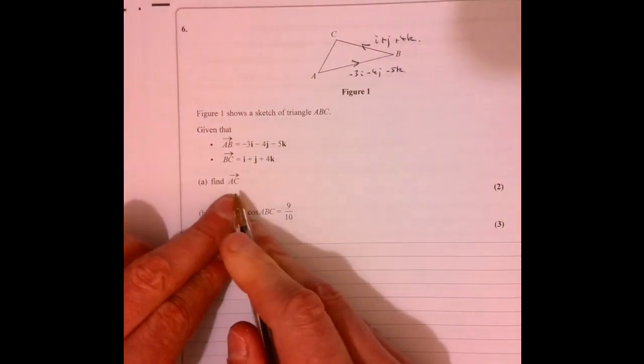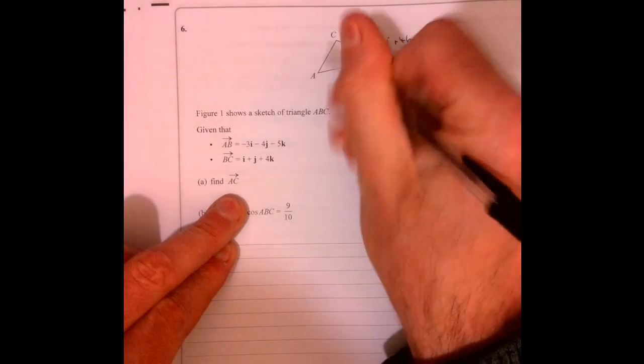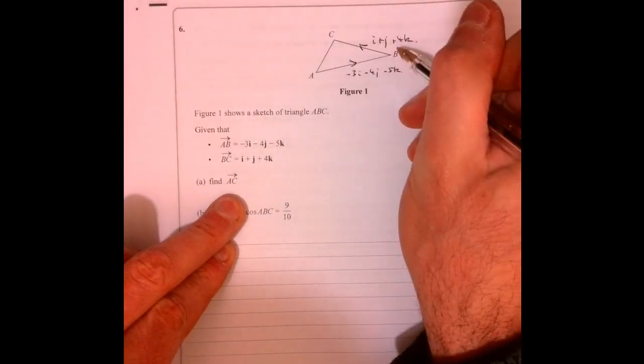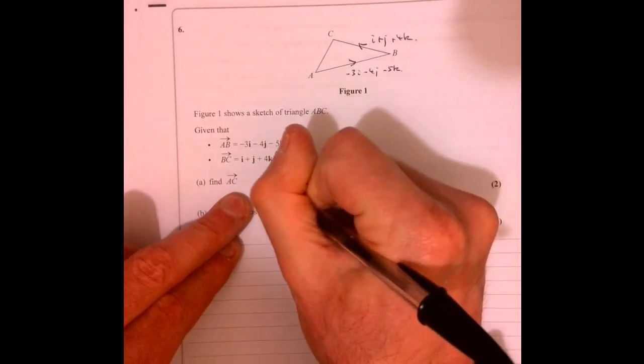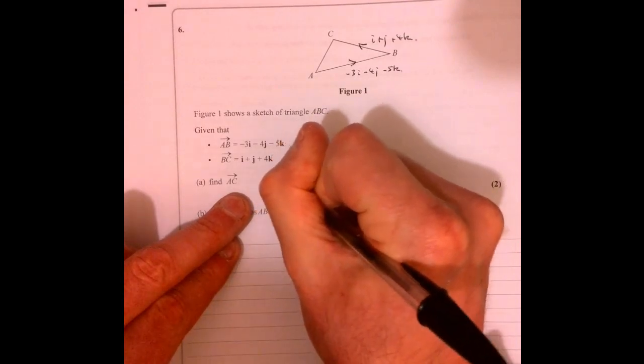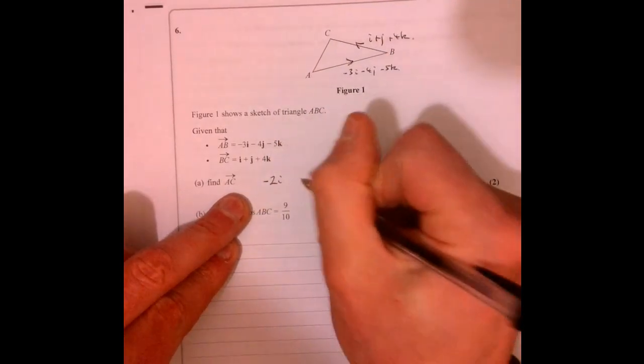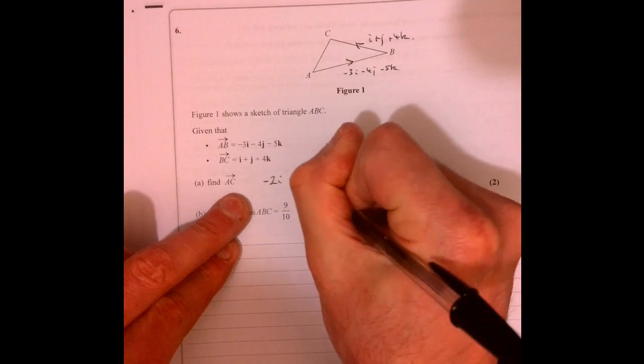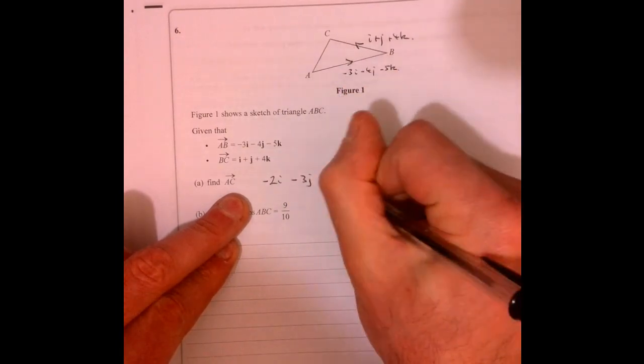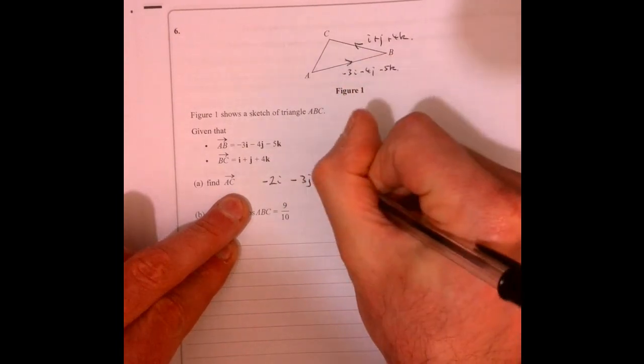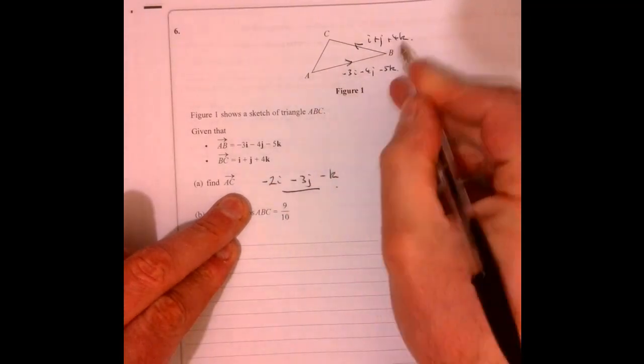So first question is what's vector AC? Well, that's just these two added together, isn't it? So if I add those two together, then that's going to give me minus 2I minus 3J and then minus K. So just add those together.